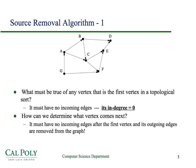What must be true of any vertex that's the first vertex in a topological sort? It must have no incoming edges. The way computer scientists think about this is that the in-degree of the vertex is equal to zero. The in-degree is just a measure of how many edges end at a particular vertex.